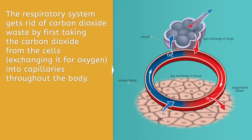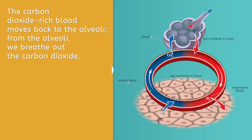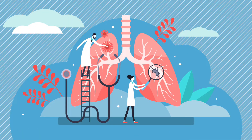The respiratory system gets rid of carbon dioxide waste by first taking the carbon dioxide from the cells, exchanging it for oxygen, into capillaries throughout the body. The carbon dioxide-rich blood moves back to the alveoli, and from the alveoli, we breathe out the carbon dioxide. Bravo! We are learning! In future lessons, we'll continue to unpack body systems. Now go fortify your learning with the practice questions, and remember to always be clever!